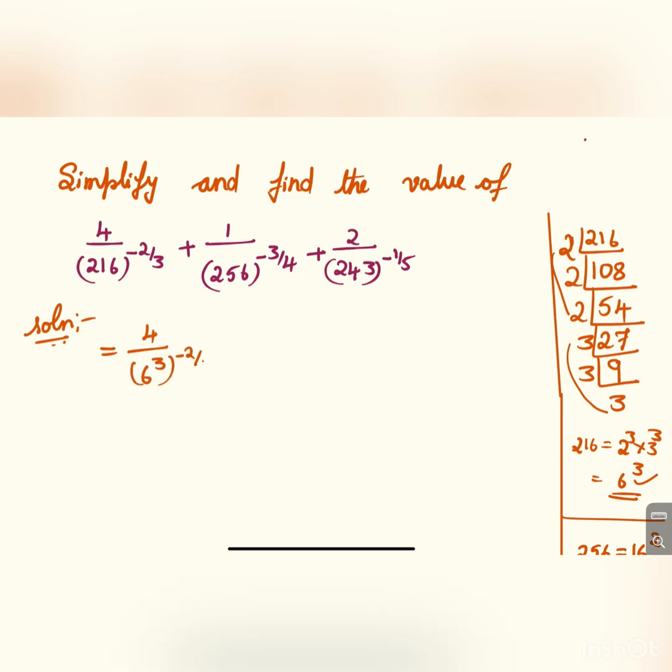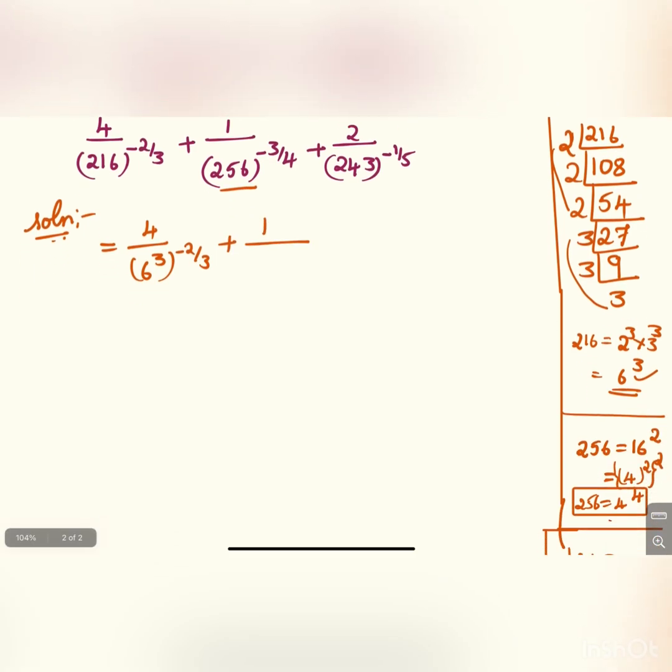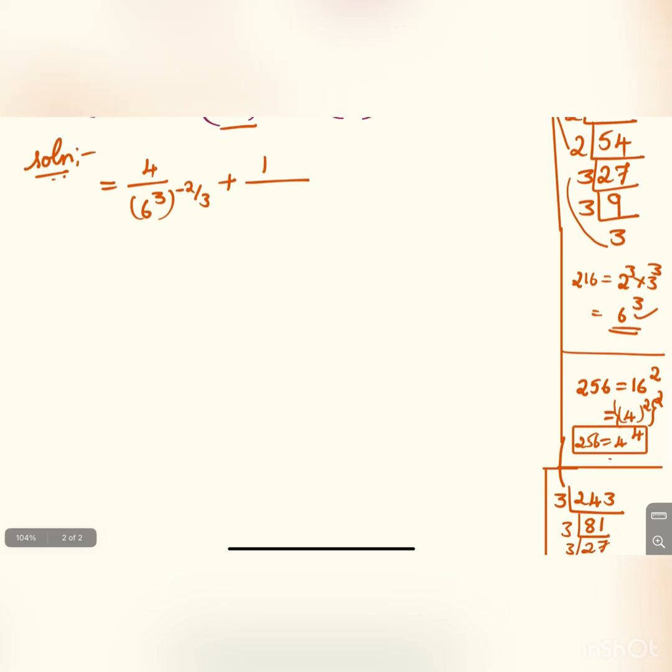Plus 1 divided by 256 is nothing but 16 square. This 16 square can be written as 4 square to the whole square, and that will be 4 to the power 4, whole to the power minus 3 by 4.